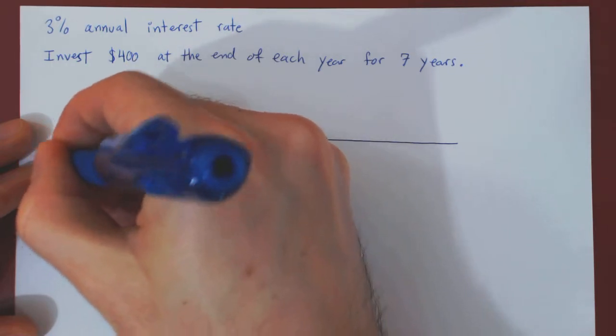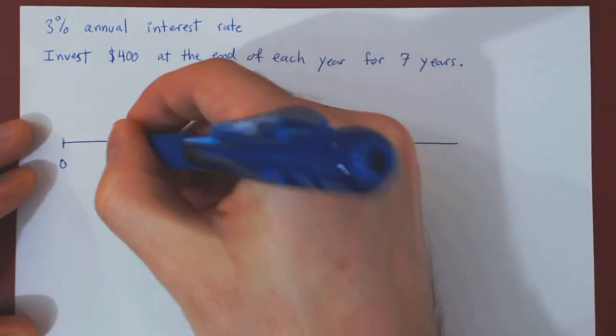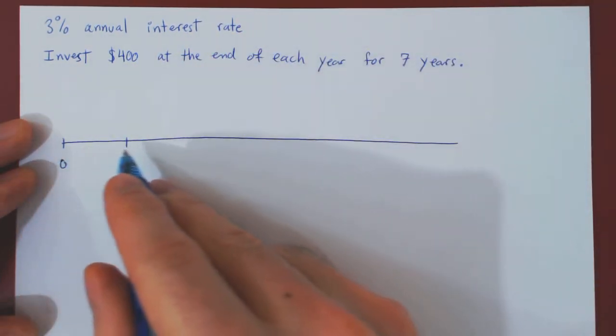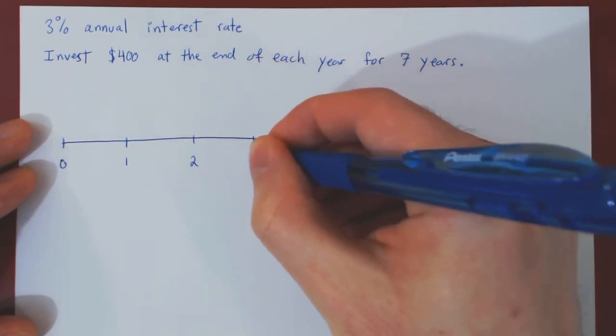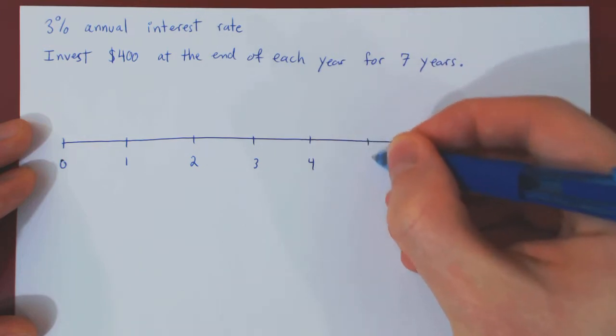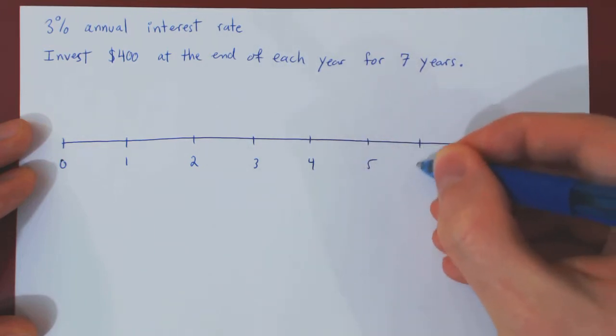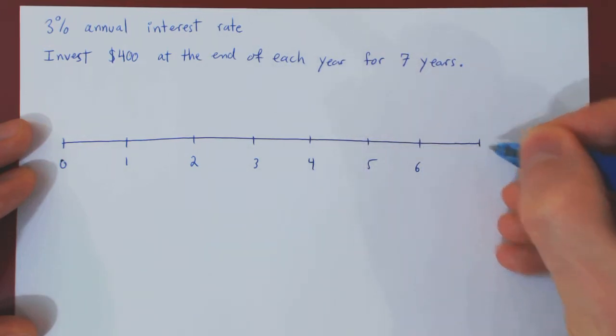So we have the initial time 0, then year 1, 2, 3, 4, 5, 6, and 7.